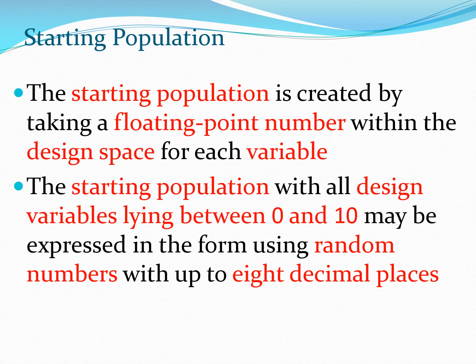The starting population is created by taking a floating point number within the design space for each variable. You look at the lower and upper bound for each design variable and find a floating point number within that range, then generate many such numbers to create the entire starting population. For example, with a lower bound of 0 and upper bound of 10, you can generate random numbers using a uniform distribution, ensuring good spread across the design space.